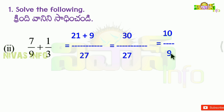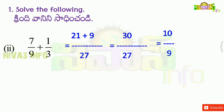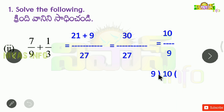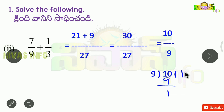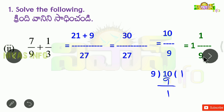Now, if we have 10 by 9, the numerator is greater than the denominator, so it is an improper fraction. We convert it into a mixed fraction by dividing: 9 goes into 10 once, with remainder 1. So the answer is 1 and 1 by 9.